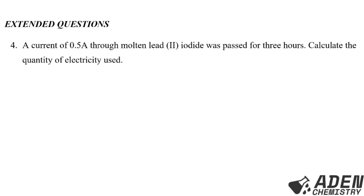Question 4 is an extended question — please try it and share your answer in the comments section. A current of 0.5 amperes was passed through molten lead(II) iodide for 3 hours. Calculate the quantity of electricity used.